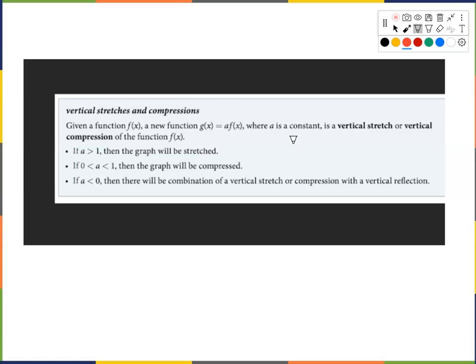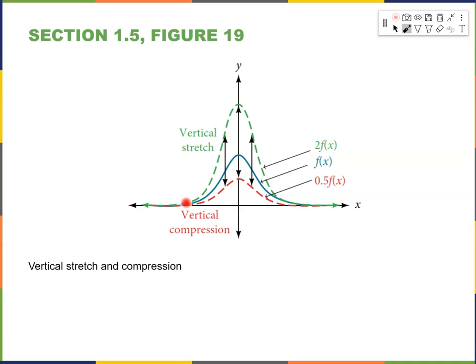Vertical stretches and compressions: given a function f of x, a new function g of x equals a times f of x is a vertical stretch or compression. If a is greater than 1, it is a vertical stretch. If a is between 0 and 1, it is a vertical compression. If a is less than 0, it is a combination of vertical stretch or compression with a reflection.